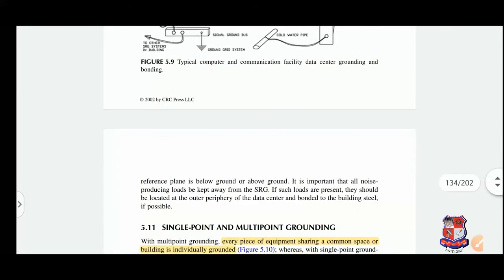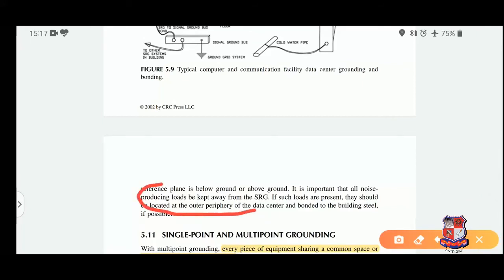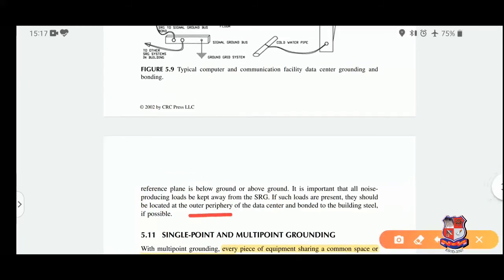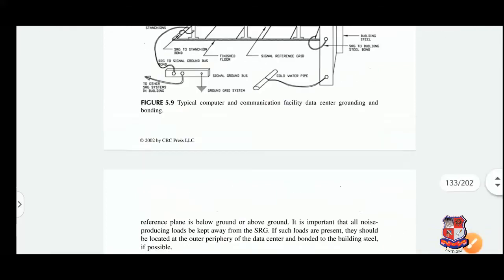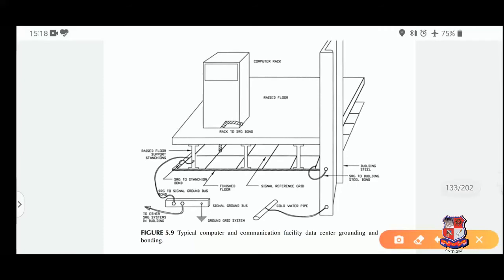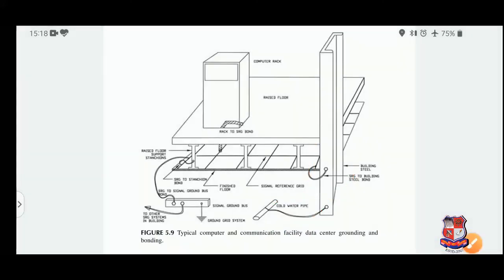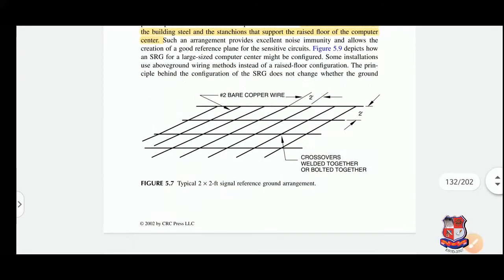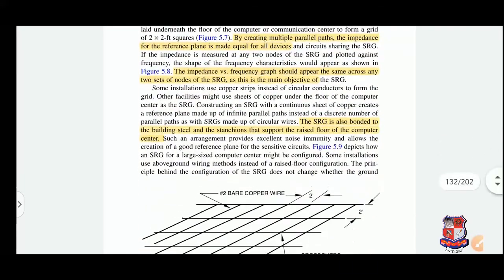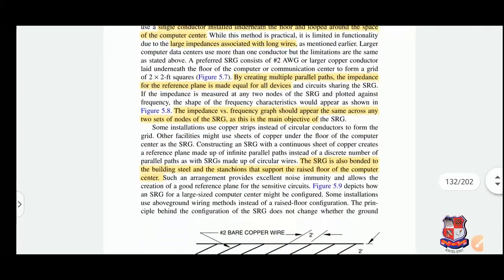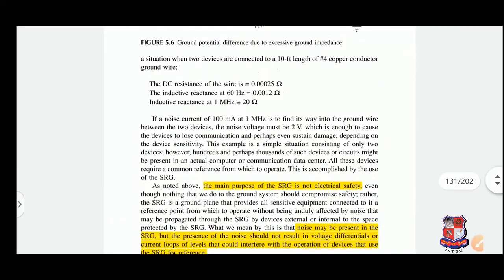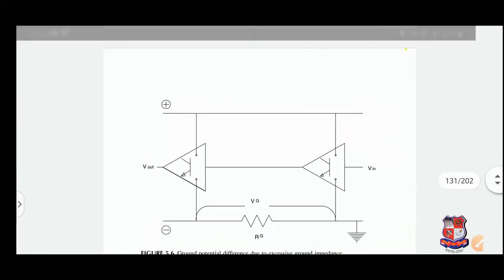One important precaution: all noise-producing loads must be kept away from the SRG. If such loads are present, they should be located at the outer periphery of the data center and bonded to the building steel, so that they can easily create a low-impedance path to ground. In this way, we can understand the signal reference ground method — how it is constructed, what its purpose is, and how it is useful for sensitive equipment. Thank you very much.